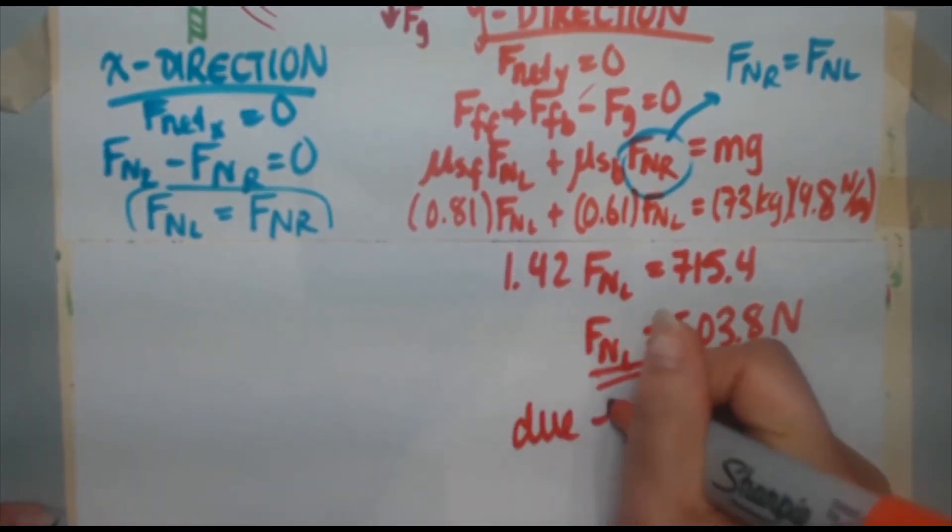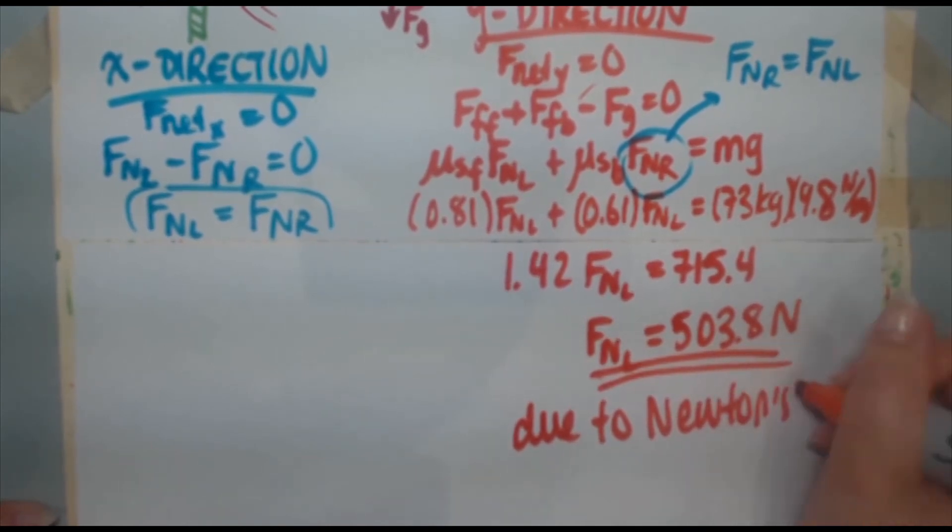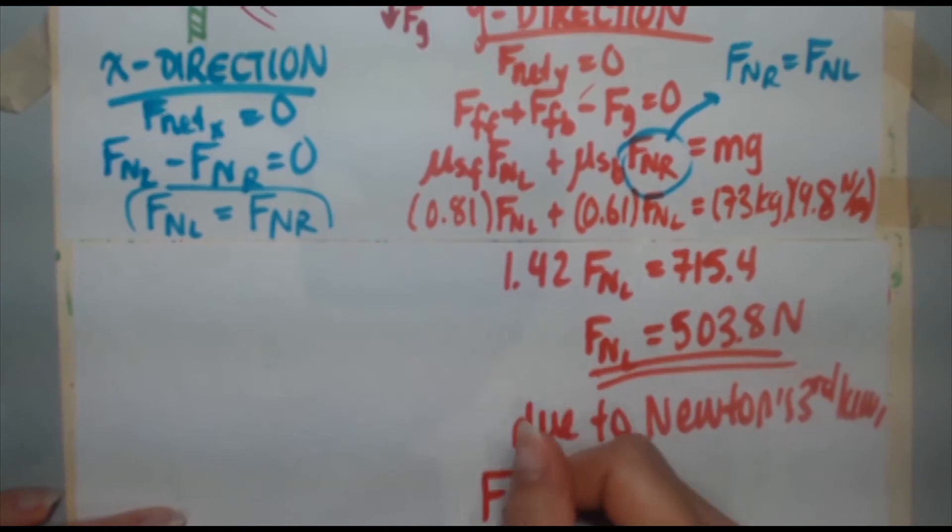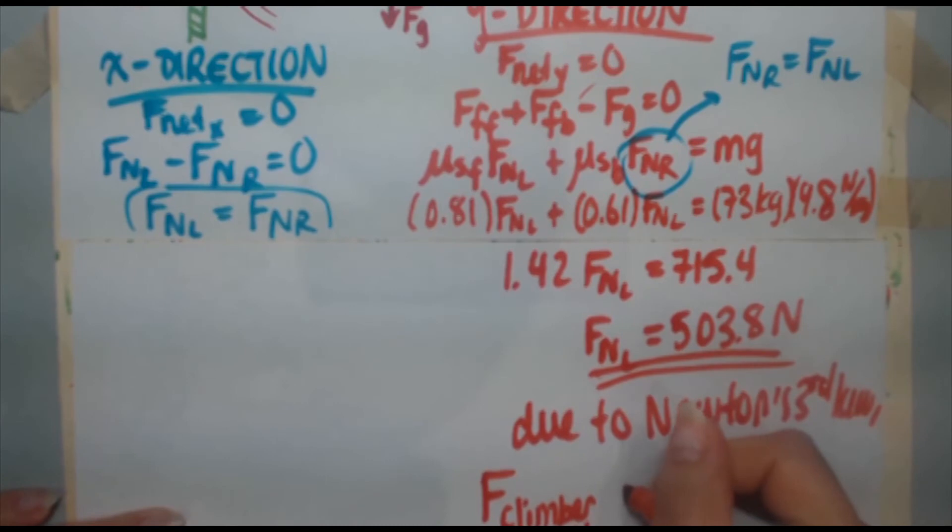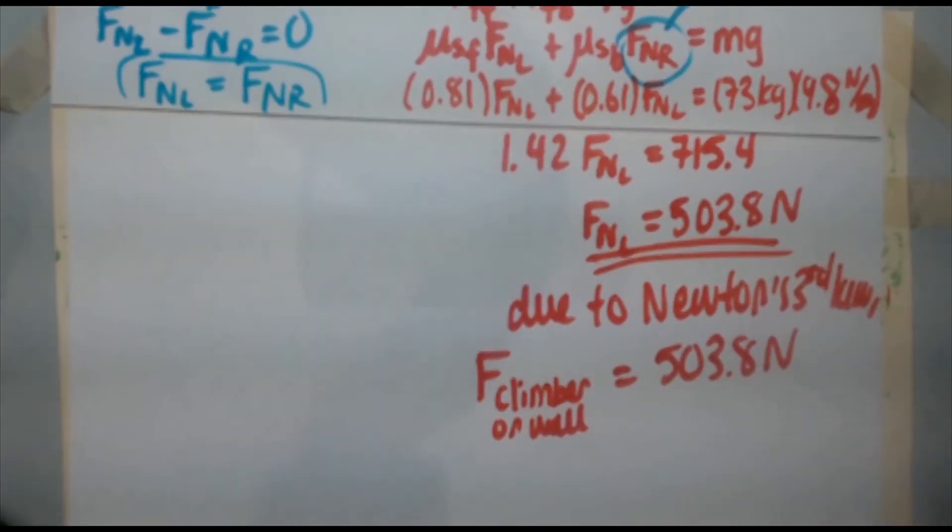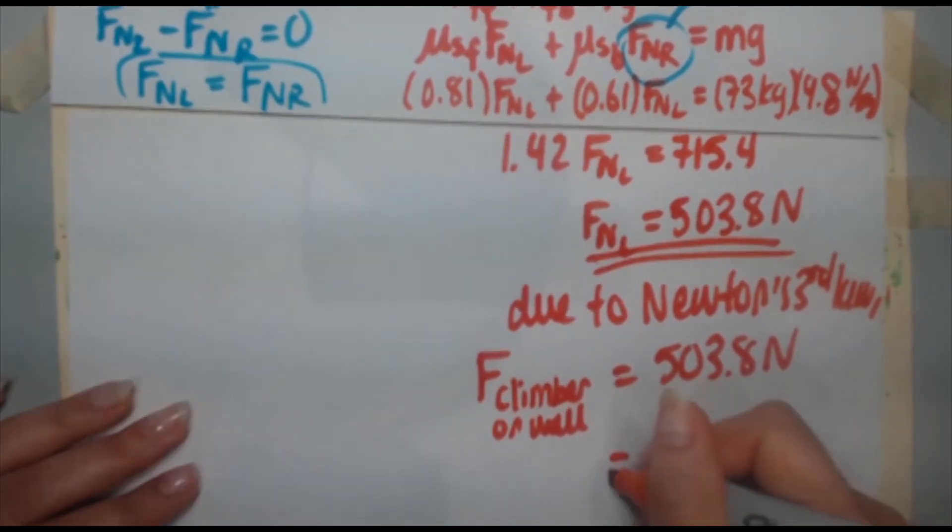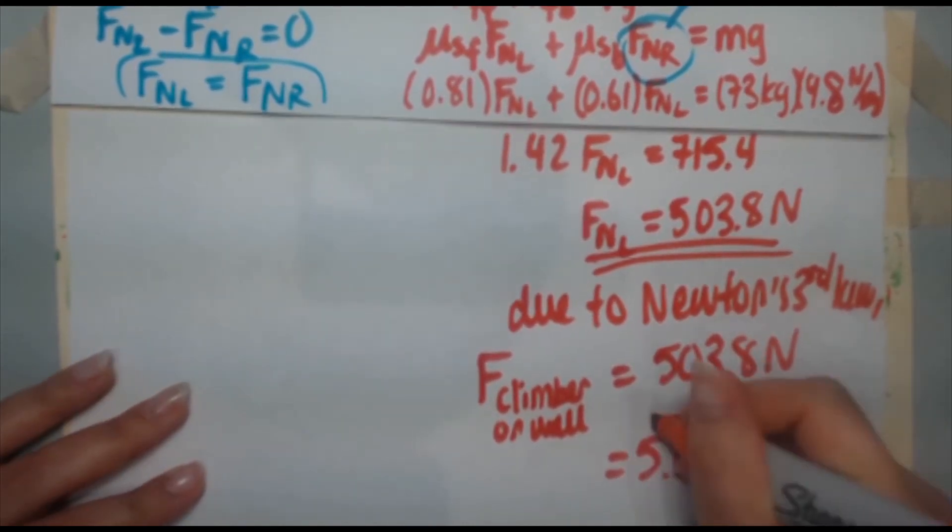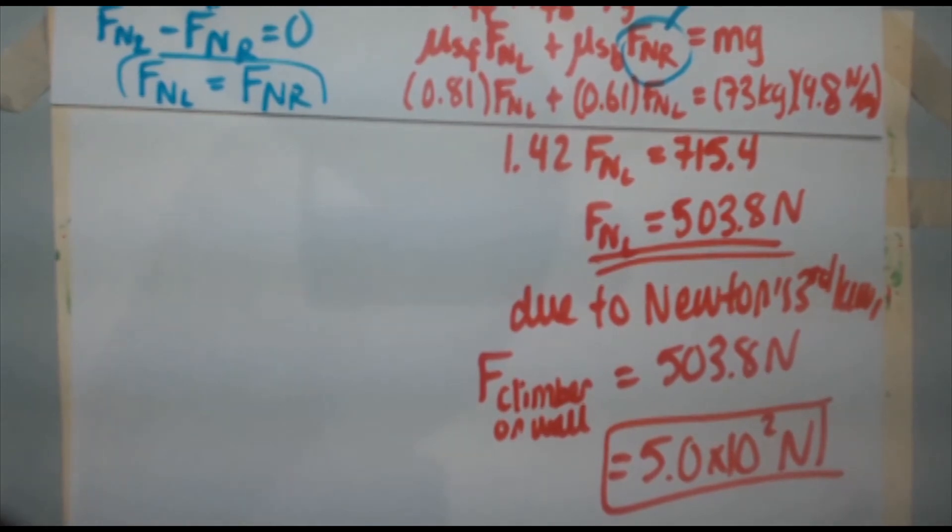So due to Newton's third law, the force of the climber on the wall therefore must also equal to 503.8 newtons. But of course, we have to express this in the proper number of sig figs, which requires two. So we're going to express that as 5.0 times 10 to the two newtons. And that is the force that the climber must exert on the wall in order to remain stationary.